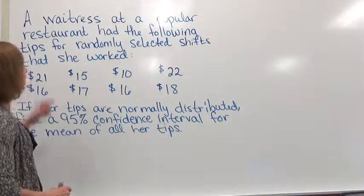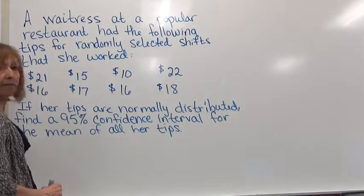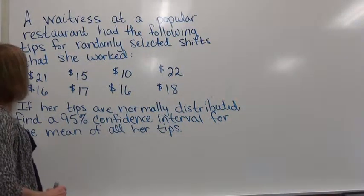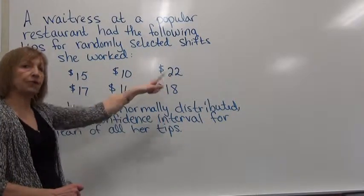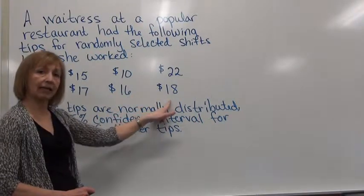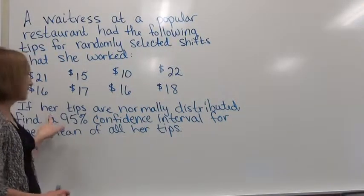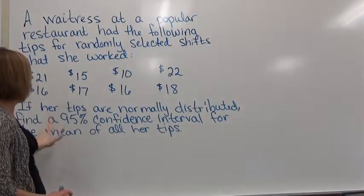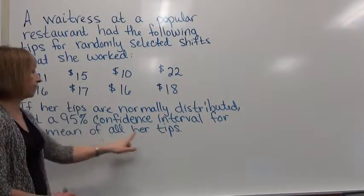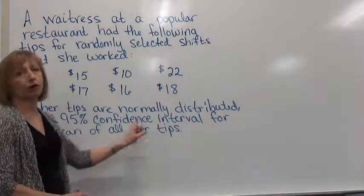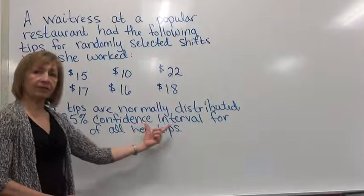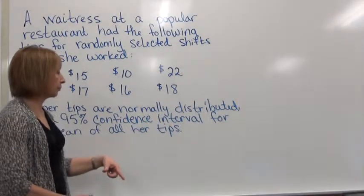In this question, we have a waitress at a popular restaurant had the following tips for randomly selected shifts that she worked: $21, $15, $10, $22, $16, $17, $16, and $18. The question says, if her tips are normally distributed, find a 95% confidence interval for the population mean of her tips. So we want a confidence interval for the population parameter mean.